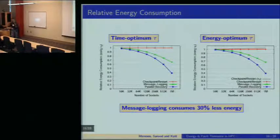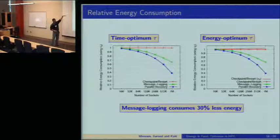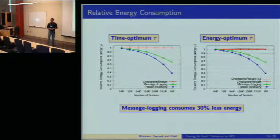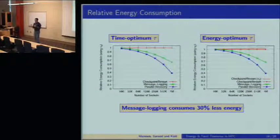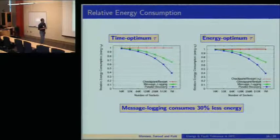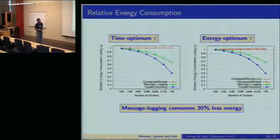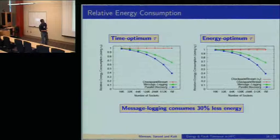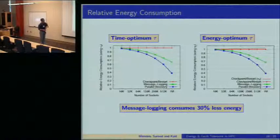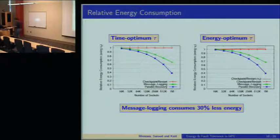For energy, using the tau that optimizes time but measuring energy, the figures are similar to the time plot except that message logging is better than checkpoint restart throughout the whole range. The key takeaway: message logging may be slower in execution time, but it is always better in terms of energy consumption. The energy plot using the optimum tau for energy looks very similar, and we can decrease energy consumption a little further by using a tau that optimizes energy rather than time.